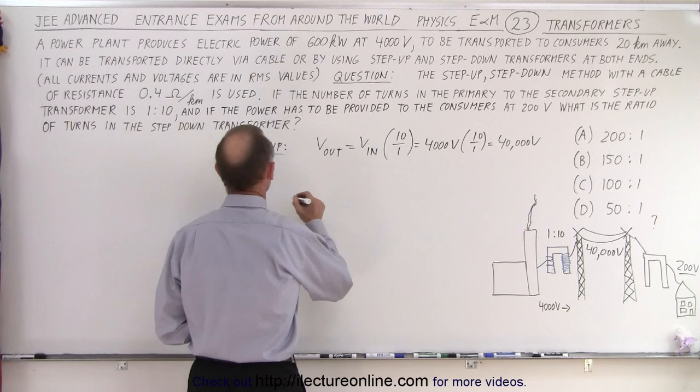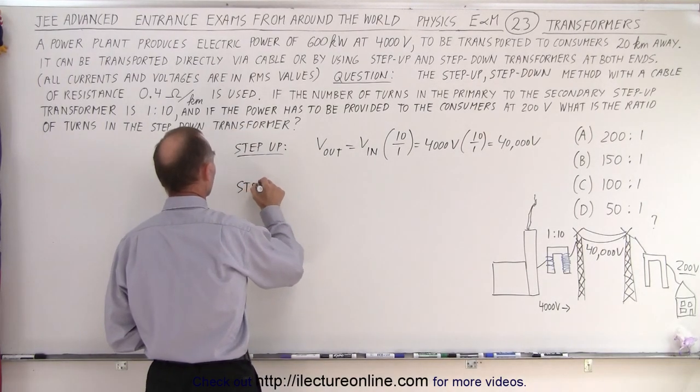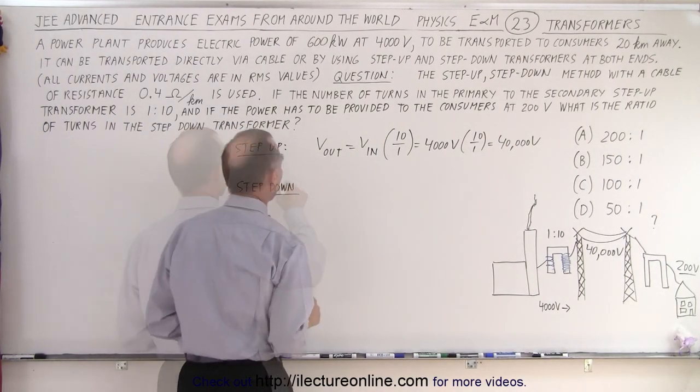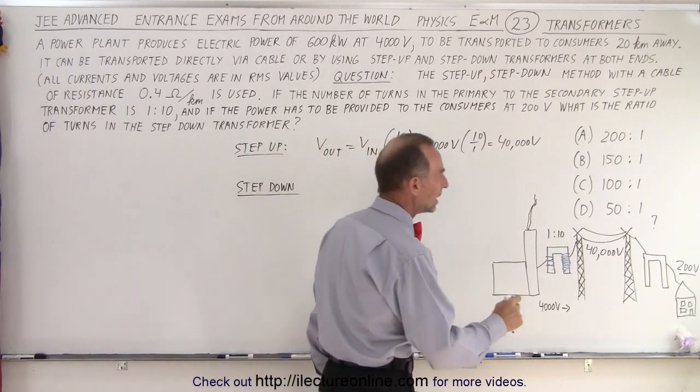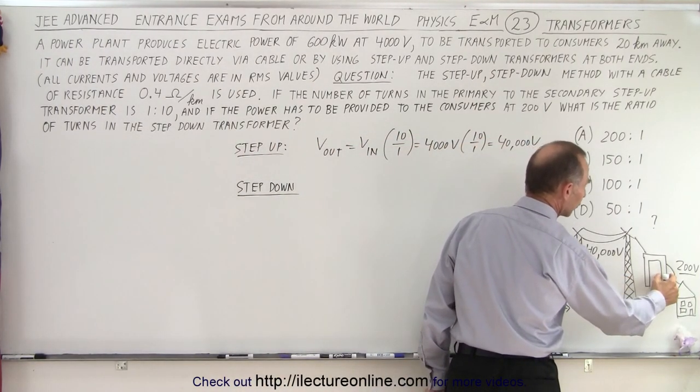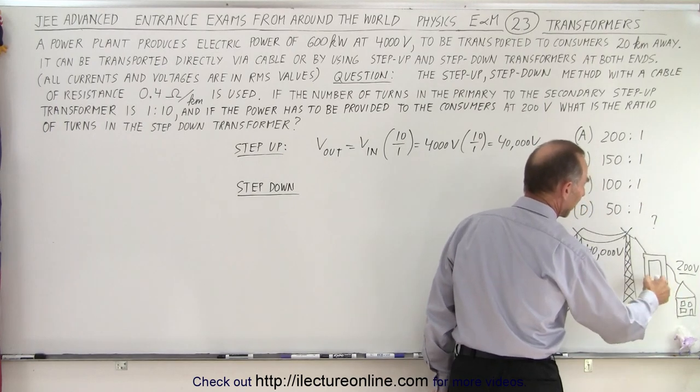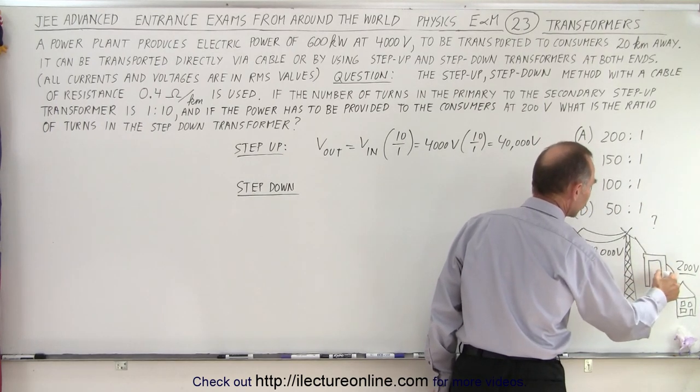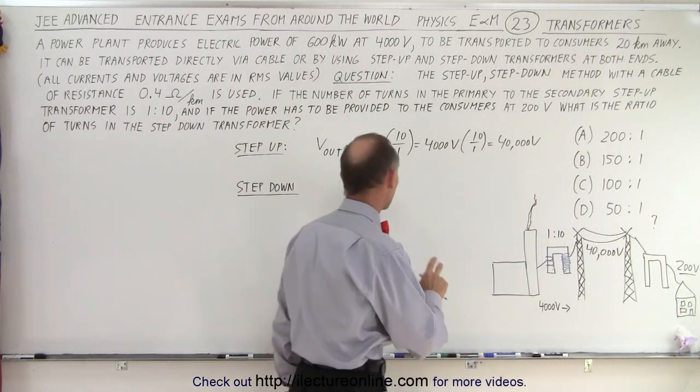So there what we need to do is we need a step-down transformer. And notice we need a lot of turns on the input and few turns on the output, which will step it down. So we'll have a large to a small ratio to step down the transformer.